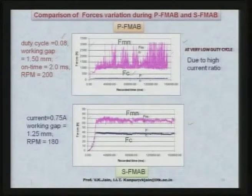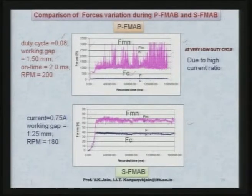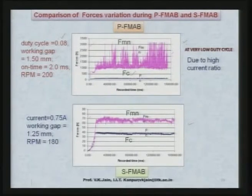With a duty cycle of 0.08 — the lowest duty cycle in our pulse generator — the highest normal force achieved was around 3000 Newton, while in the case of smooth DC power supply it was around 70 to 75 Newton. This very large increase in normal forces is responsible for the penetration of the abrasive particle inside the workpiece surface.